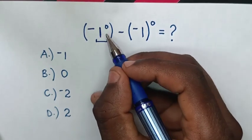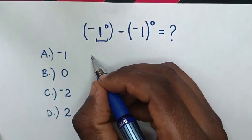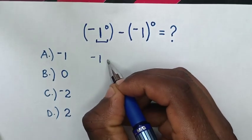Therefore, 1 power 0 is 1. Then, it will be negative 1 power 0 is 1 minus,